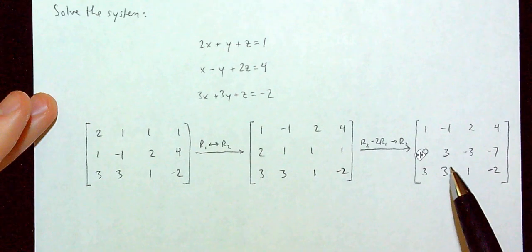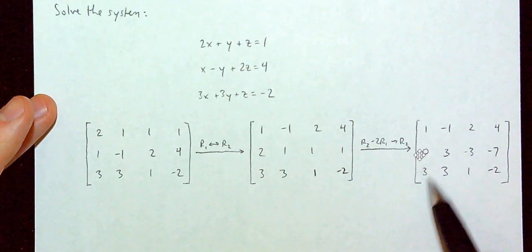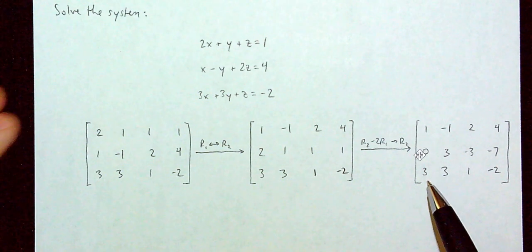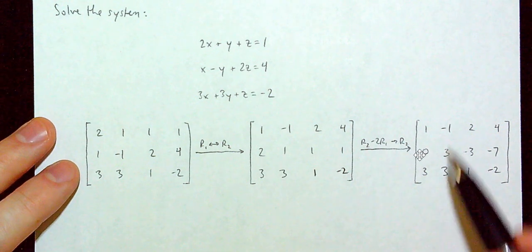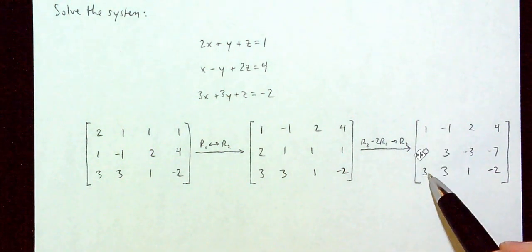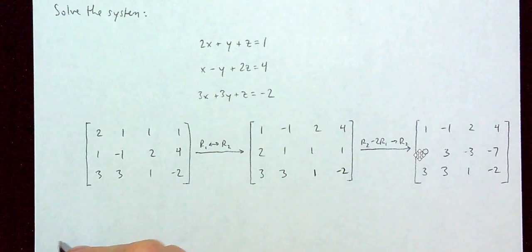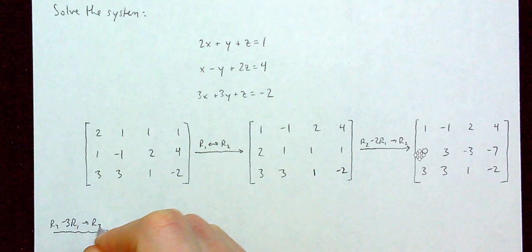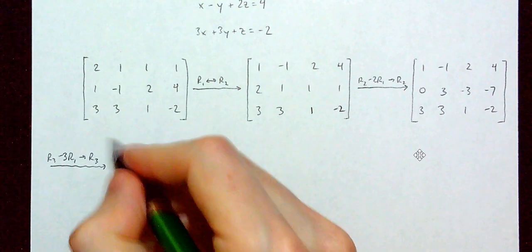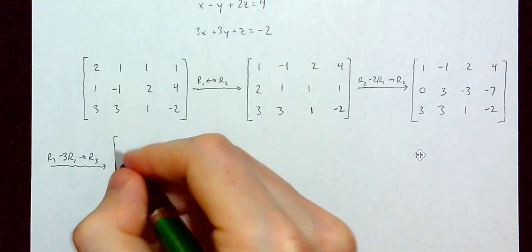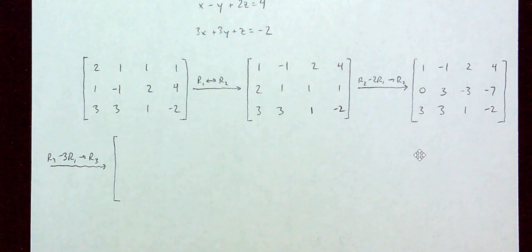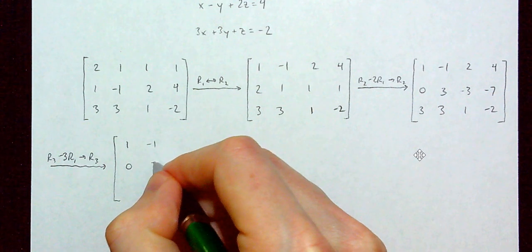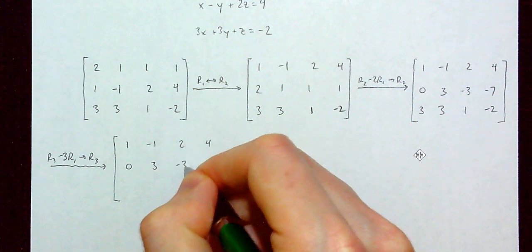Now I need this entry in row 3 to be zero. I do row 3 minus 3 times row 1 as new row 3. Rows 1 and 2 stay the same: 1, negative 1, 2, 4 and 0, 3, negative 3, negative 7. Row 3 changes to: 3 minus 3 is 0; copy down next entries; 1 minus 3 times 2 is 1 minus 6 or negative 5; negative 2 minus 3 times 4 is negative 14... wait, let me recalculate row 3.